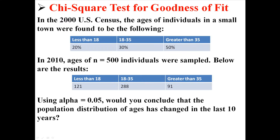So, let's work with an example. In the 2000 US Census, the ages of individuals in a small town were found to be the following. We found out that 20% of the people were less than 18 years old, 30% were between 18 and 35, and 50% were greater than 35.